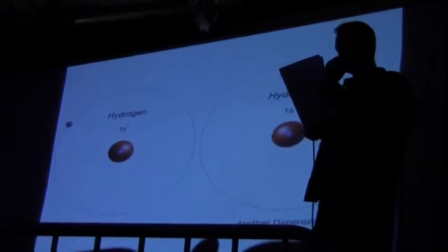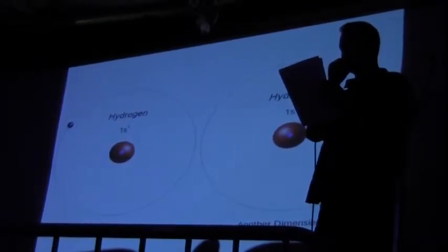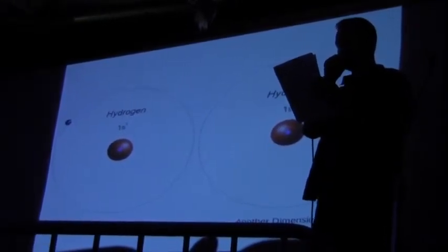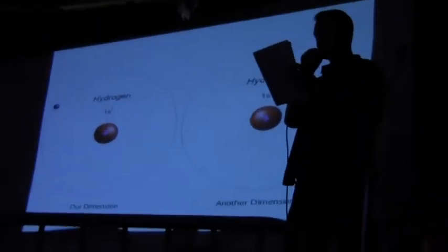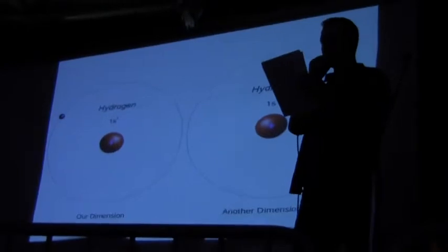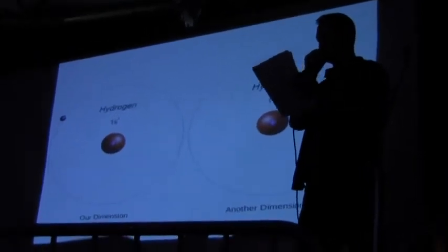An electron is an electron, regardless of what dimension it's in, and electrons are contained in everything. The movement of electrons is what creates electricity. If it goes from a hydrogen atom in this dimension to a hydrogen atom in another dimension, it will exist in the same state of matter.